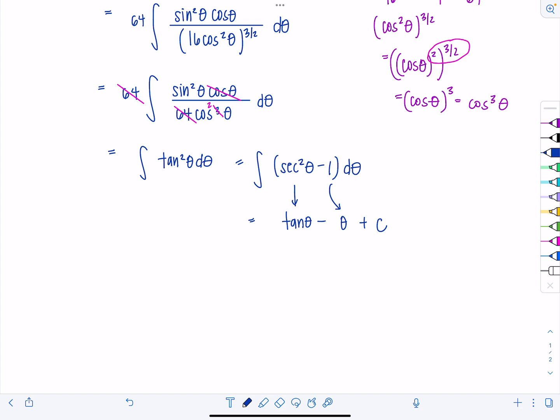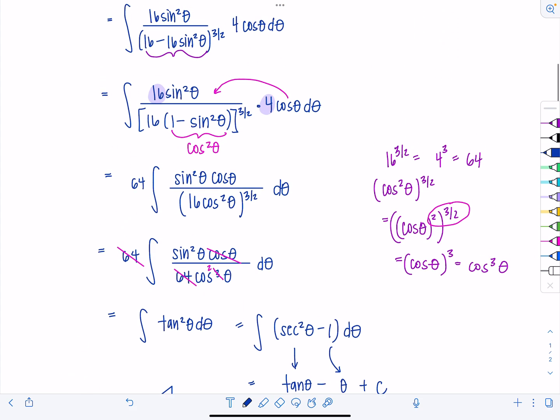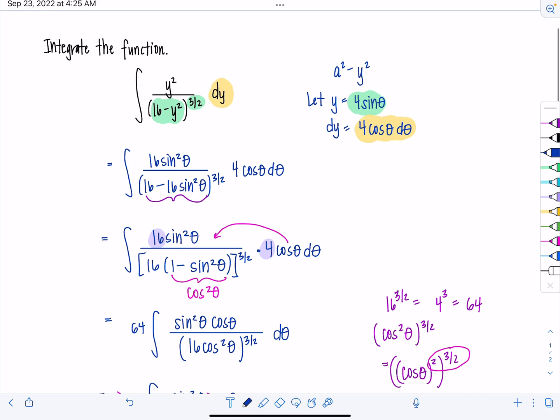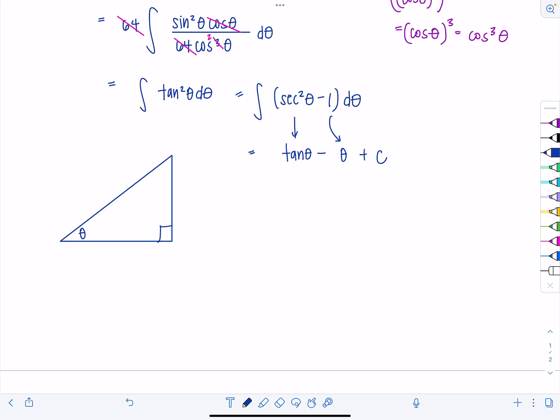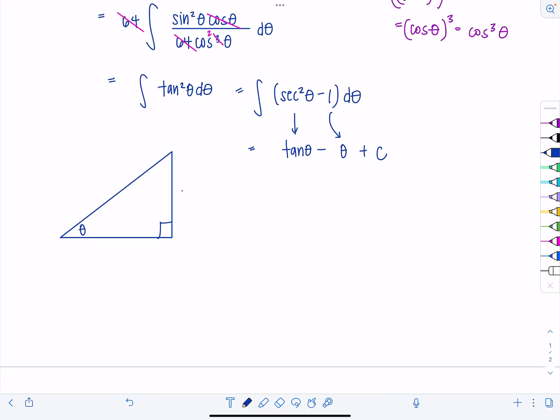But no, we're not done. Remember, our original integral was in terms of y. So we got to go back there. How do we do it? It's triangle time. Go back to that original substitution that we made. We said that y was equal to 4 sine theta. That means that sine of theta is equal to y over 4. And we know sine of theta is the ratio of the opposite side over the hypotenuse. So using the Pythagorean theorem, this missing side is going to be square root of 16 minus y squared.